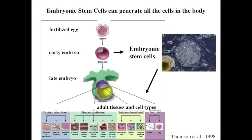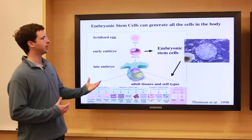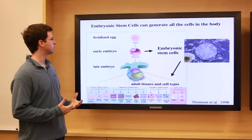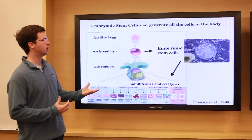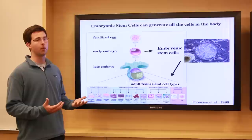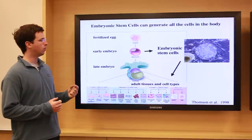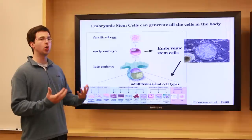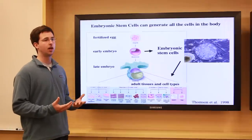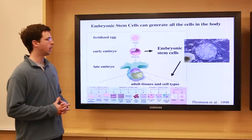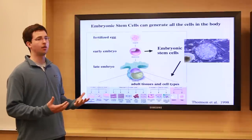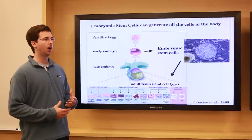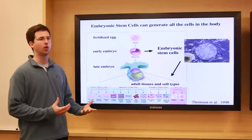One critical breakthrough that allowed researchers to generate actual human neurons was the discovery that embryonic stem cells could be cultured from early human embryos. This allowed researchers to generate cultures of human embryonic stem cells, which are capable of forming all the cells in the adult body. We can take embryonic stem cells and coax them into forming different types of neurons in a culture dish. But unfortunately, these are not patient-specific cells — the embryonic stem cell lines available are not from patients suffering from a disorder, so they don't have the right gene mutations that would be causing these neurological disorders.